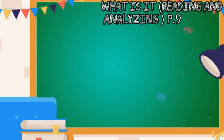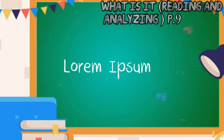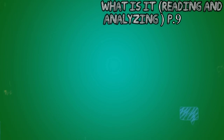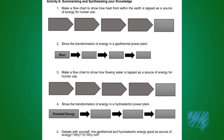Moving on to 'What I Have Learned — Activity 6.' In this activity, we will summarize what we have learned from today's lesson. Make a flowchart showing: first, how heat from the earth is used as energy; second, the transformation of energy in a geothermal plant; third, how the flow of water is used as an energy resource; and fourth, the transformation of energy in a hydroelectric power plant. Finally, on your own opinion, are geothermal and hydroelectric power plants a good source of energy, and why?